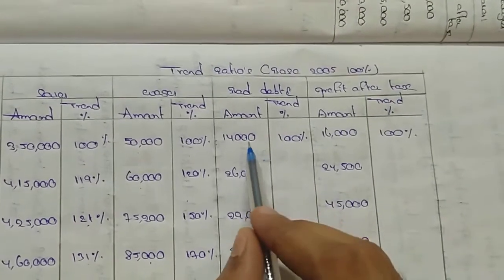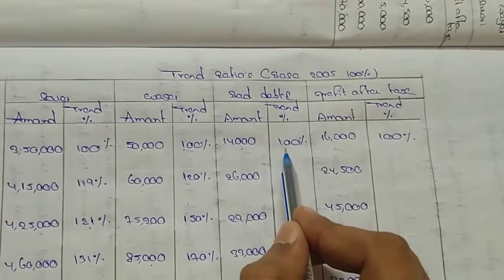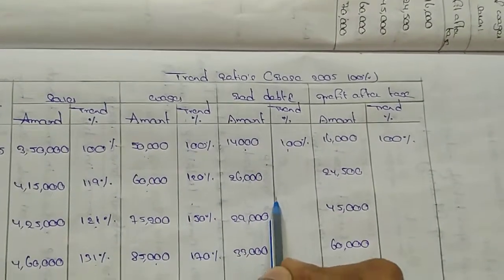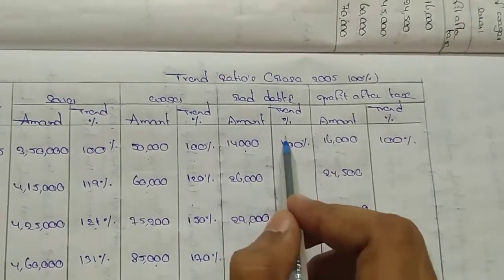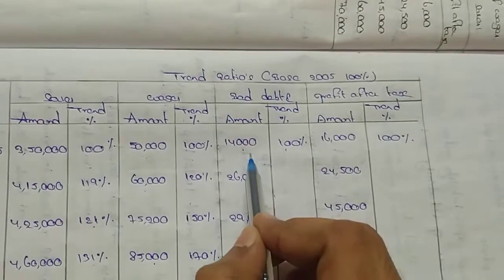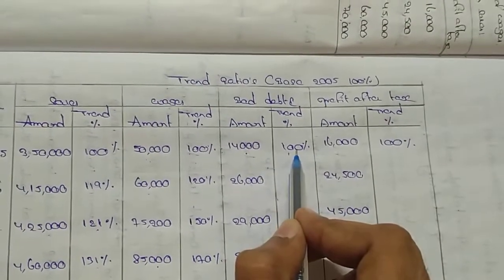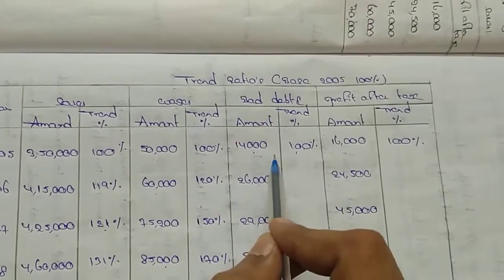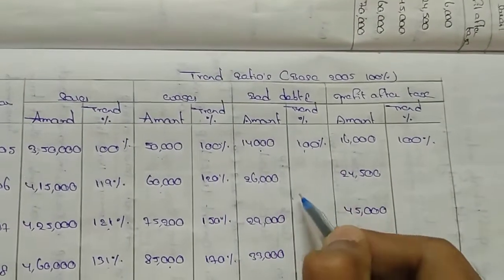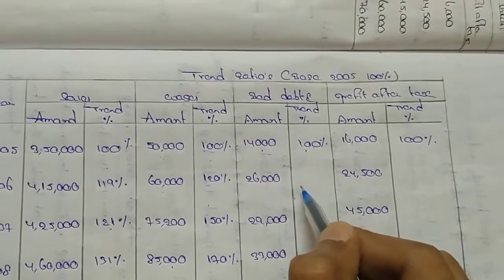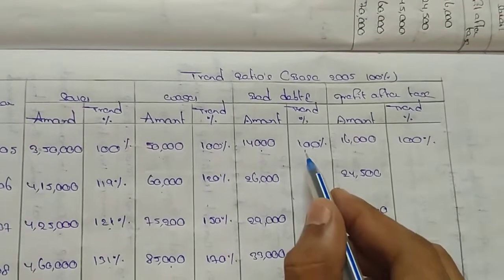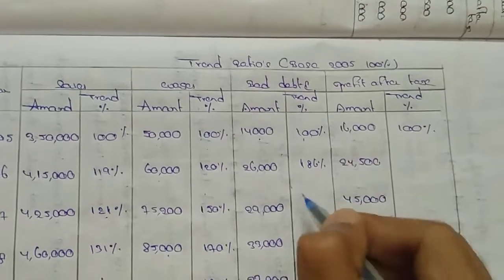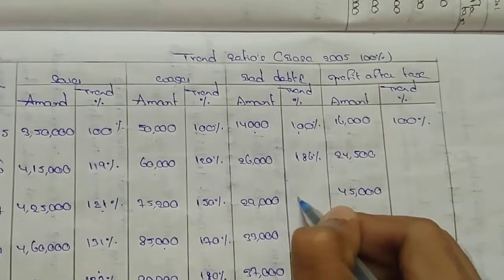For bad debts trend ratio: 14,000 divided by 100 gives 140 — that is the 1% value. Then 26,000 divided by 140 gives approximately 186. The base year 2005 = 100%. Next, 16,000 divided by 100 gives the 1% value for that item.